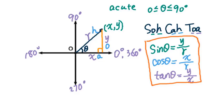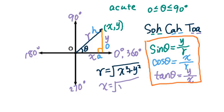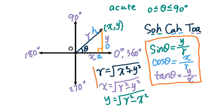For this right triangle we also use the Pythagorean theorem. Therefore r equals the square root of x² plus y², x equals the square root of r² minus y², and y equals the square root of r² minus x². We'll use these formulas together to solve the guided practice problems.